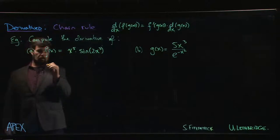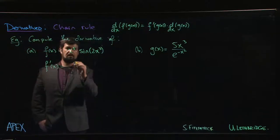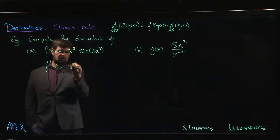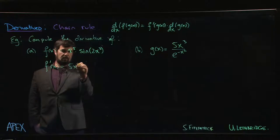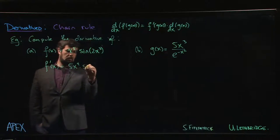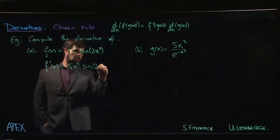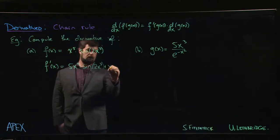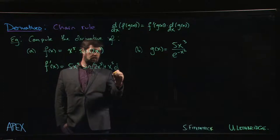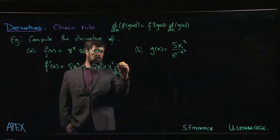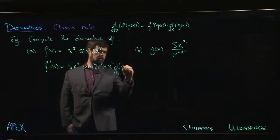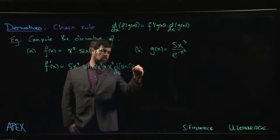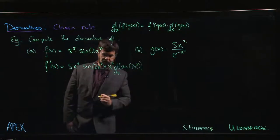So we want to compute the derivative. So f prime of x, we're going to have the derivative of x to the fifth. Let's just do that straight away. 5x to the 4 times sine of 2x cubed plus x to the fifth times the derivative of sine of 2x cubed.